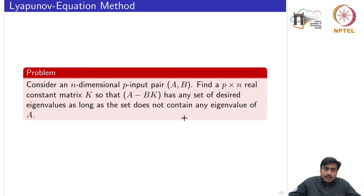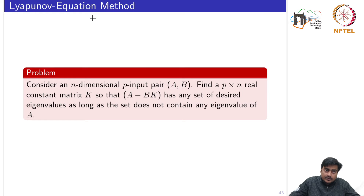For the single input case, we discussed two design methods for the state feedback controller: eigenvalue assignment and the Lyapunov equation method. In the eigenvalue assignment method, the feedback gain was computed by taking the inverse of the controllability matrix. Since the controllability matrix here is not square, we cannot take its inverse. So the eigenvalue assignment approach cannot be applied directly for the multivariable case. However, the Lyapunov equation method does not require the inverse of the controllability matrix, so we examine whether it applies.